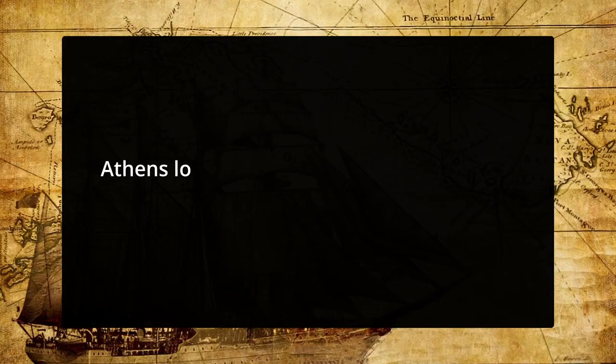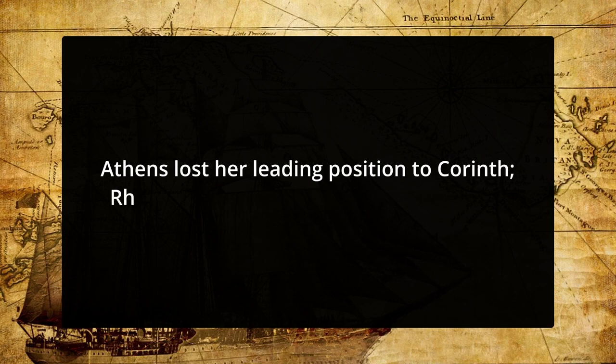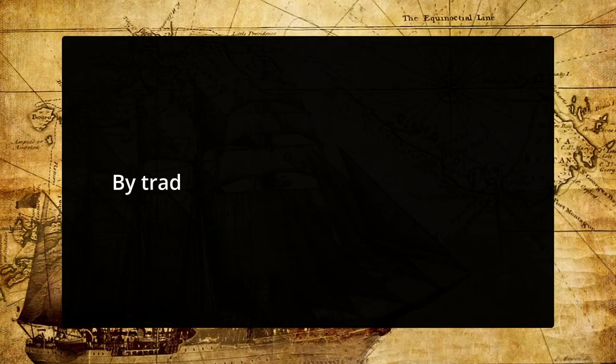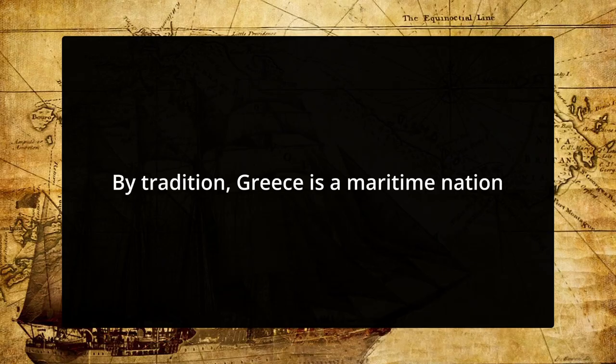Up to this period, the maritime states of the Mediterranean observed a uniform custom of Grecian maritime law due to their exclusive Grecian origin. However, Athens lost her leading position to Corinth. Rhodes was followed later by Alexandria, where most of the world's sea trade was concentrated at the time of the Roman Empire's approach. By tradition, Greece is a maritime nation, as shipping is the oldest kind of occupation among the Greeks and a vital component of ancient Greek economic activity.